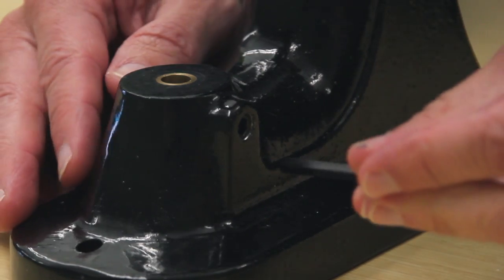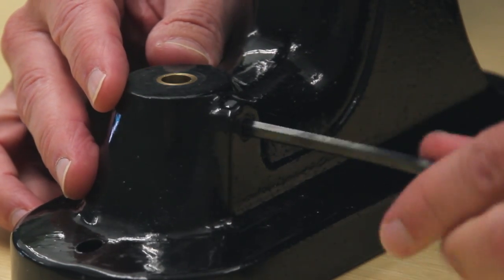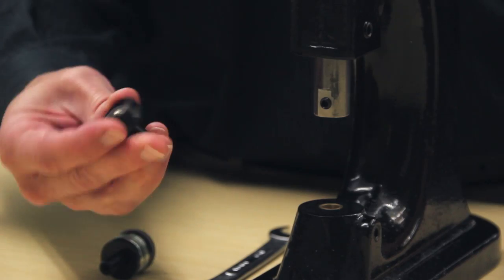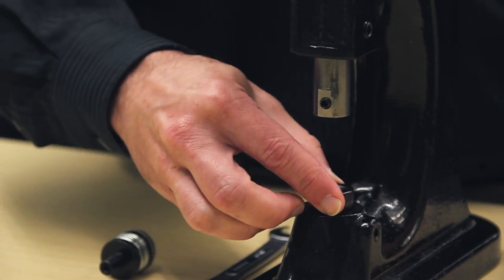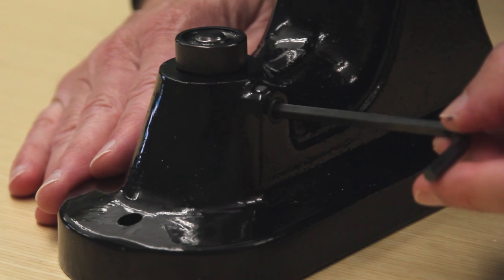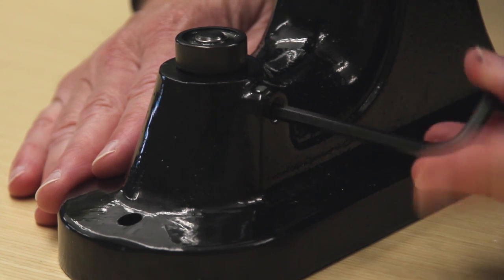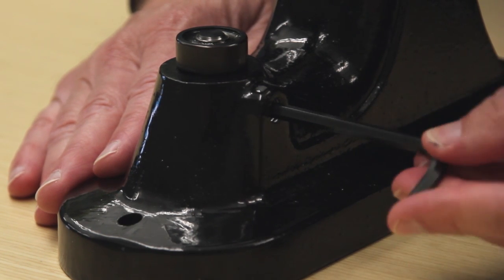First loosen the upper and lower die shank set screws. Then place the lower washer die into place and tighten its set screw. The washer die is slightly shorter and provides a platform for the washer to rest upon.